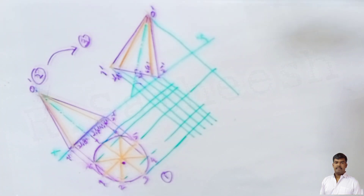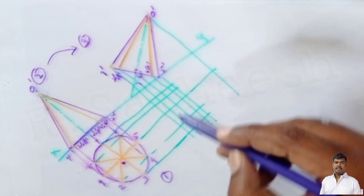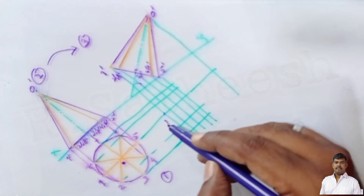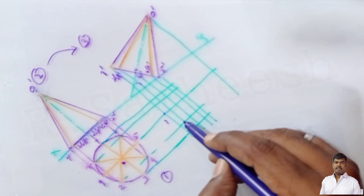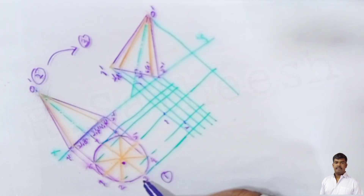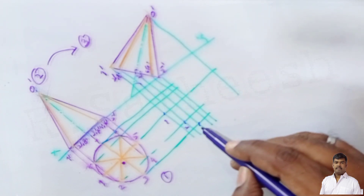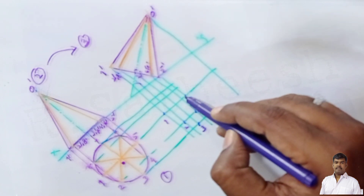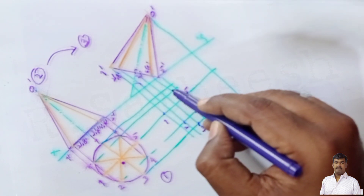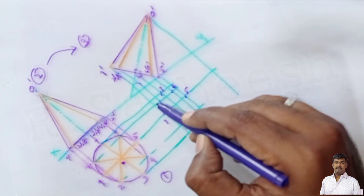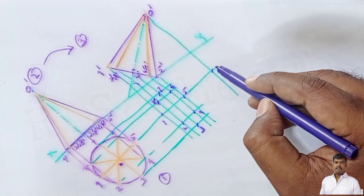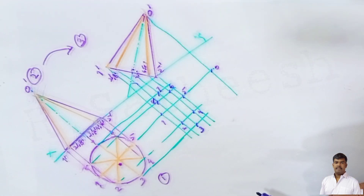Assign numbers to the fourth diagram: point 1 corresponds to 1, point 2 to 2, point 3 to 3, point 4 to 4, point 5, point 6, point 7, point 8, and apex O. Now we have the front view after tilting and we want to draw the final top view.